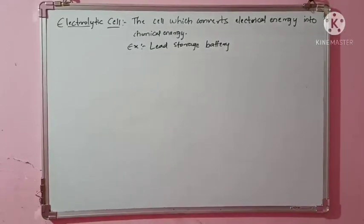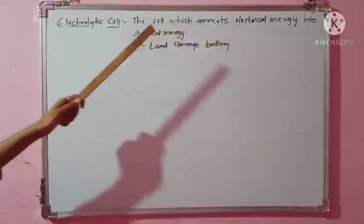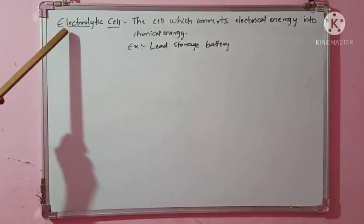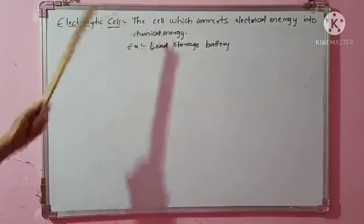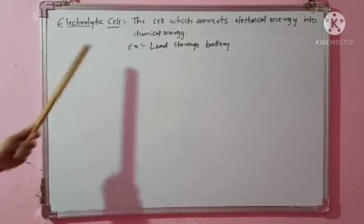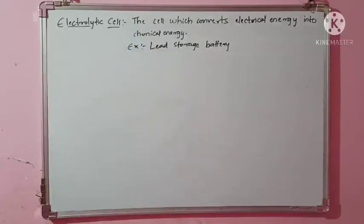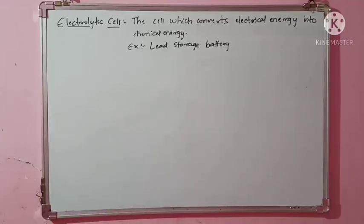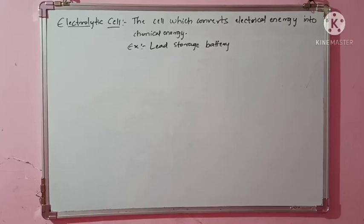In the electrolytic cell, electrical energy is converted into chemical energy. That means you are providing electricity and that electricity is used to bring about a chemical change — a chemical reaction takes place. The best example for this is the lead storage battery. Now let us understand how to construct the electrolytic cell, that is the formation of electrolytic cell.